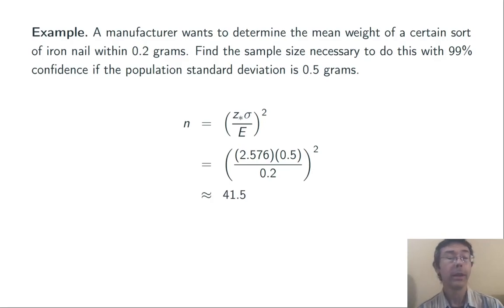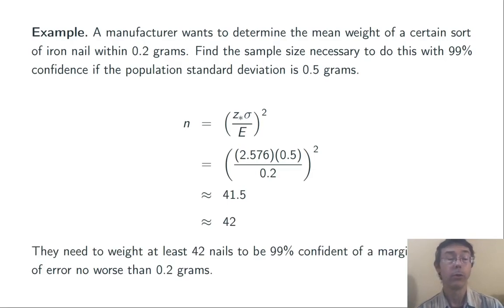Sigma is 0.5, and the margin of error that we are requiring is 0.2 grams. Simplifying all of that, we get n = 41.5, which we round up to get 42. This manufacturer needs to weigh at least 42 nails to be 99% confident of a margin of error no worse than 0.2 grams.